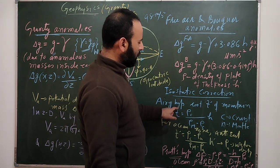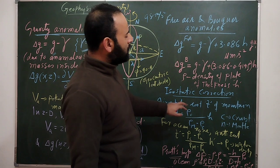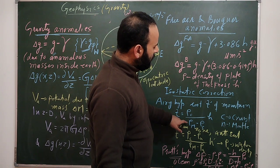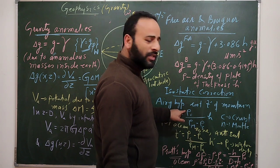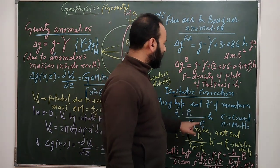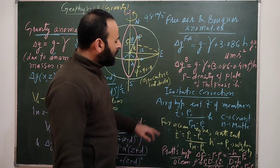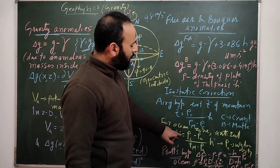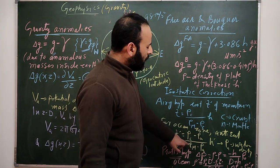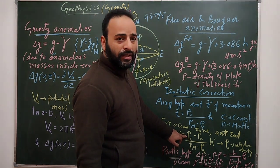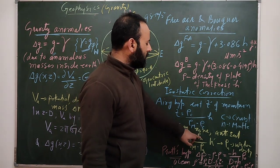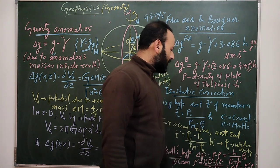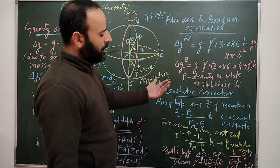The first is the Airy hypothesis. The root depth t of a mountain of height h is given by t = (ρc / (ρm − ρc)) · h, where ρc is the density of the crust and ρm is the density of the mantle. For an ocean zone, the anti-root t' = (ρc − ρa) / (ρm − ρa) · h', where ρa is the water density and h' is the depth from sea level.